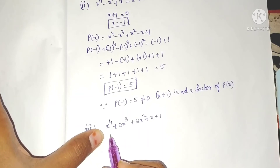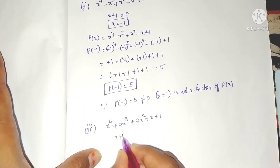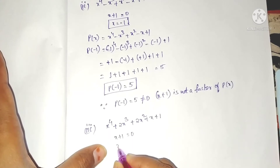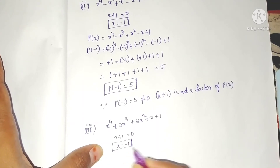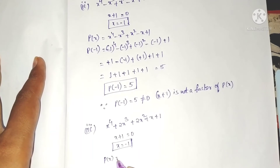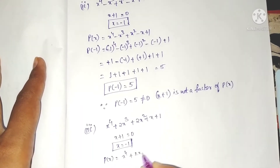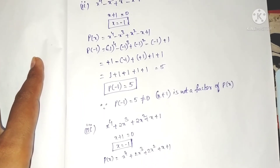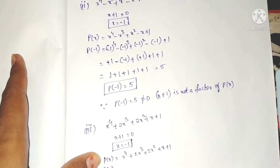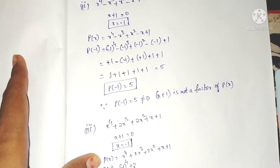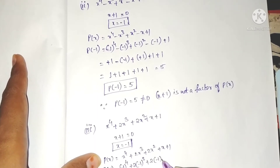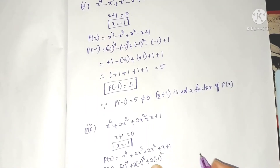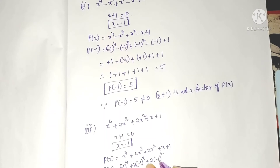Now the third problem. We have to check whether x plus 1 is a factor or not. Take x equals minus 1. The polynomial p of x equals x to the power 4 plus 2x cubed plus 2x squared plus x plus 1. Substitute minus 1 in place of x, keeping minus 1 in brackets.